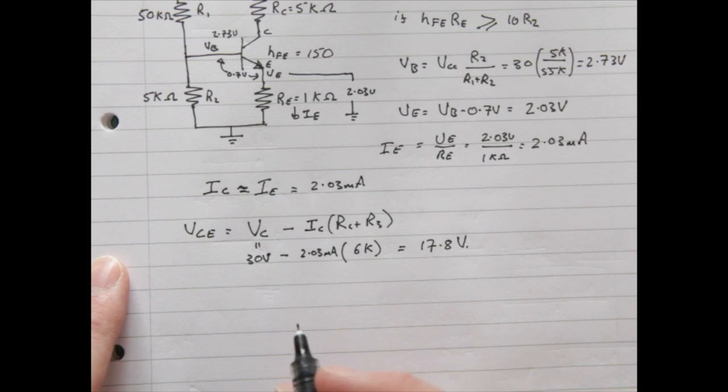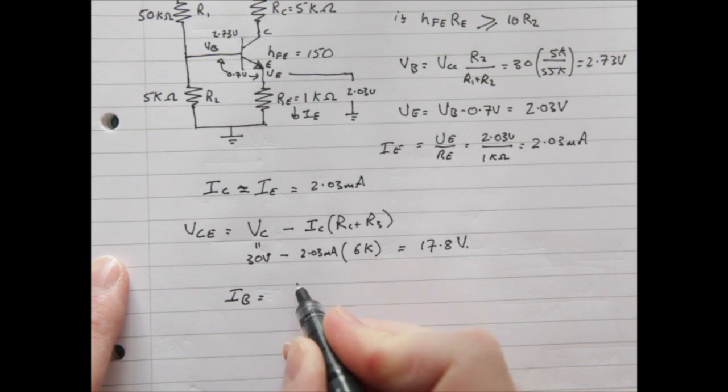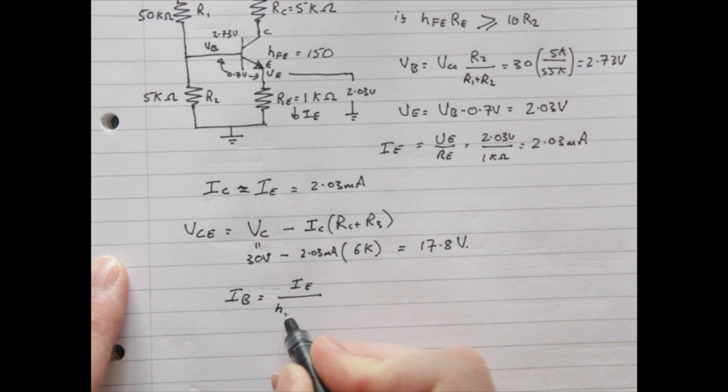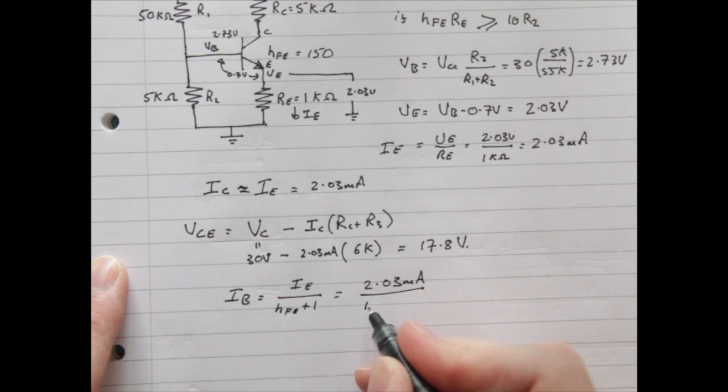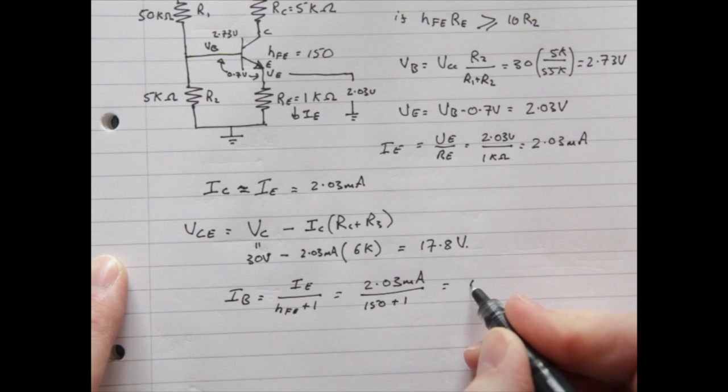The final step involves the calculation of IB. We calculate IB by taking the emitter current and dividing it by beta plus 1, or HFE plus 1. In this example, we get 13.4 microamps.